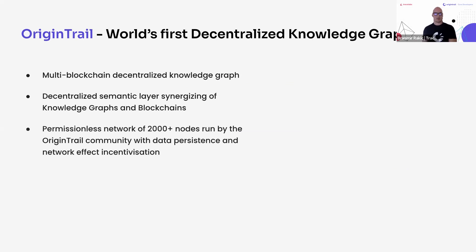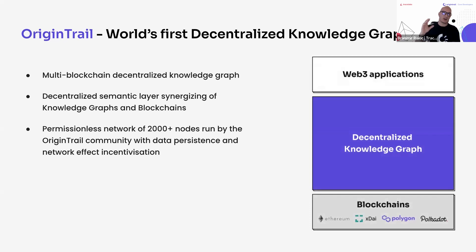OriginTrail is the world's first decentralized knowledge graph — a multi-blockchain decentralized knowledge graph that communicates with several blockchains, is decentralized in infrastructure, and uses knowledge graph technology. Essentially it's a decentralized semantic layer that synergizes knowledge graphs and blockchains. The permissionless mainnet is running with support of over 2,000 nodes run by the OriginTrail community.